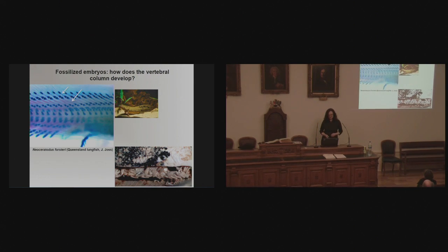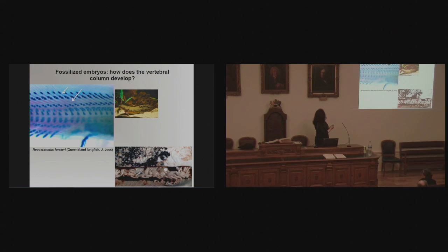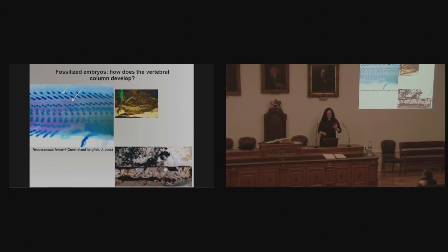We can apply this to what we see in living jawed vertebrates. Here we have a Queensland lungfish called Neoceratodus forsteri, a smaller specimen studied by clearing and staining — you clear the tissues of the body to see the skeleton inside, with stains that make cartilage blue and bone red. What we're seeing in the vertebral column of this very young Neoceratodus forsteri is that the first mineralization occurs in the shafts — very much similar to what we see in the placoderms. This pattern of mineralization in the backbone seems to first evolve in placoderms at the base of jawed vertebrates — a basal jawed vertebrate character.